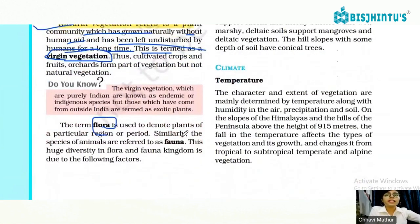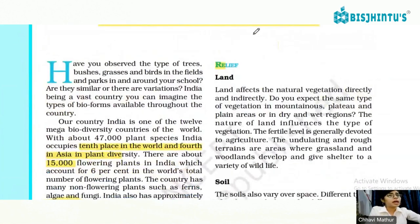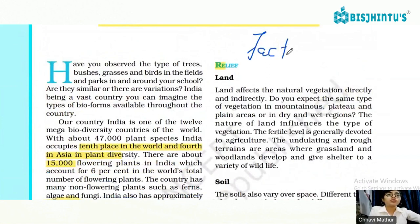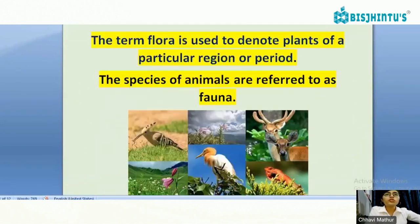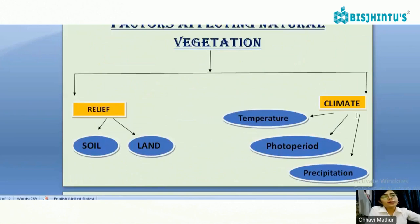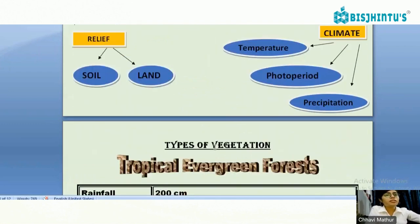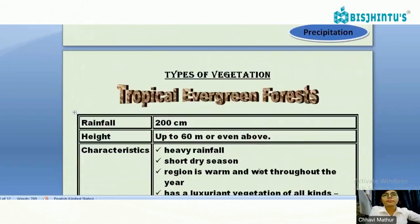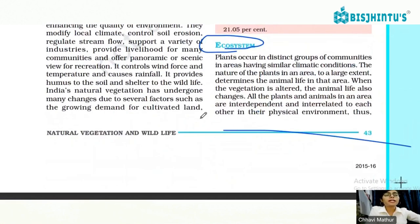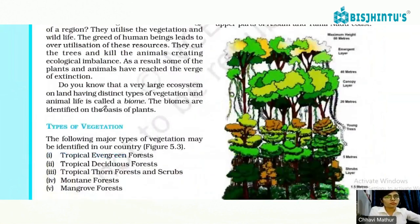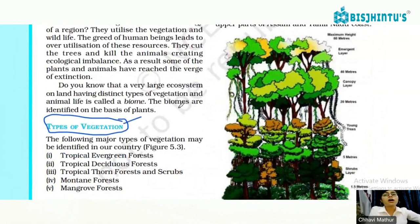Then we discussed the terms flora and fauna. We also studied which factors affect natural vegetation — Relief as a factor, covering two aspects: soil and land. Under Climate we discussed temperature, photoperiod, and precipitation. We also understood what an ecosystem is, and then we came to the main topic: types of vegetation.